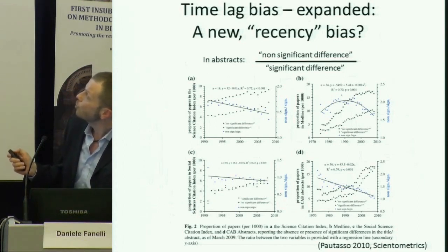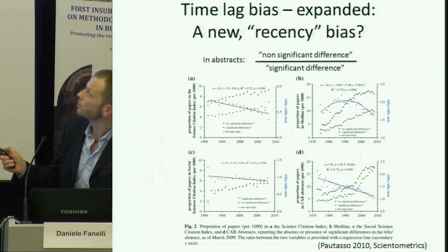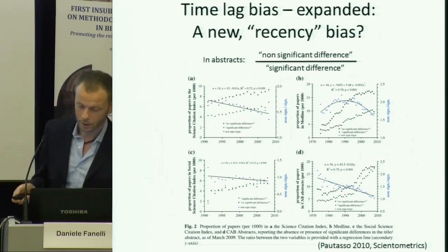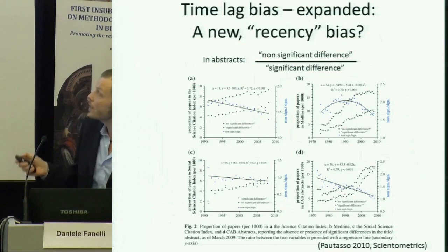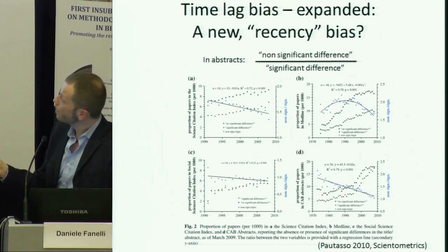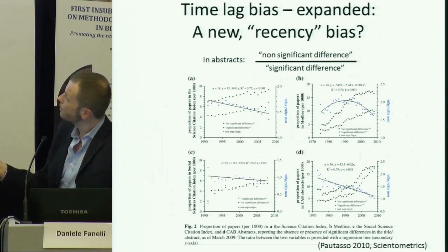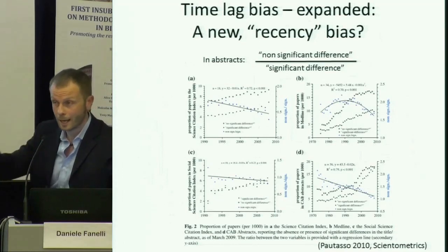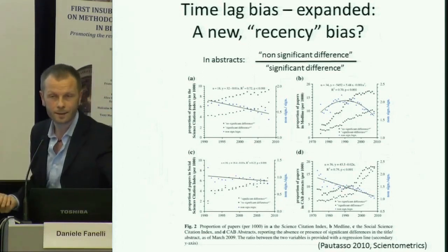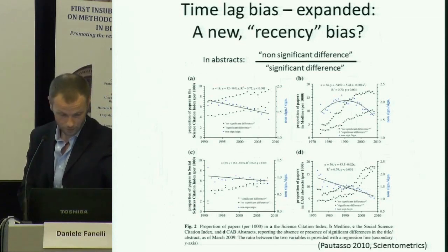A study from 2010 looked at the frequency with which the phrase 'non-significant difference' appeared in abstracts, making a proportion with 'significant difference,' capturing the reporting of both positive and null results. What they found was that in practically all electronic databases they looked at, going back even up to 40 years in some cases — and definitely since the 1990s — you see this proportion going down. So people, at least in abstracts, as far as the most important results they are reporting, are less likely to report statistically non-significant results over time.